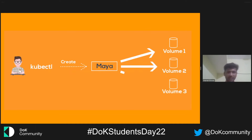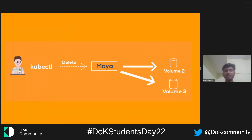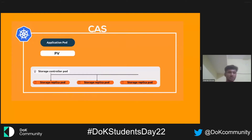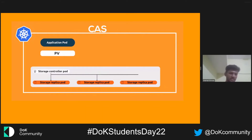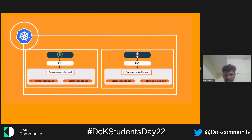If you want to create persistent volumes, it's a pretty simple thing to do — you have the create command, and if you want to delete one of them, you can use the delete command. The CAS architecture model enables each developer or DevOps team to have a storage controller dedicated to an application, giving the developer complete granular control over the storage for their workload, as we can see in this slide.